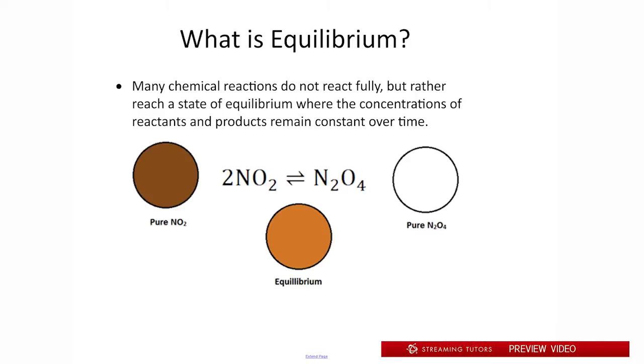What will instead happen is what you see in the middle circle there. We'll have some kind of end mixture of NO2, which is brown, and N2O4, the colorless gas, to give us some kind of a light brown looking color. So that's what we mean by equilibrium. Equilibrium is describing that point that occurs somewhere in between a full amount of reactants and a full amount of products.